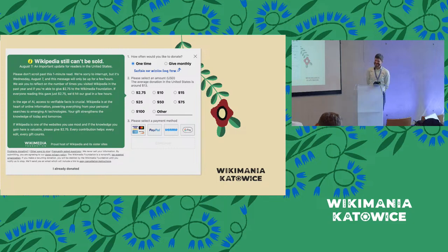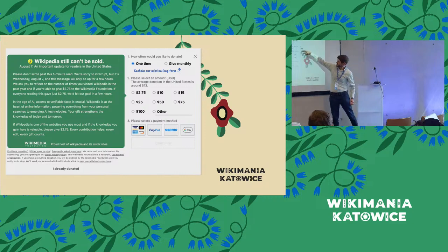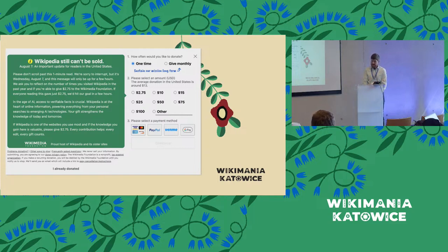Peter, the lead developer, explains that on the right side of the form there are different amounts with $2.75 being the lowest and $100 being the highest. Not many $100 donations come in, but having that option slightly moves other people up. The form also mentions that the average donation in the United States is around $13, calculated for every country. Once someone has donated, they receive emails in future years, which is an opportunity to upgrade donors and see if they're willing to give more.